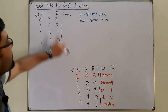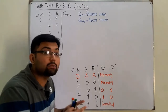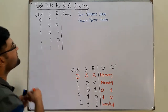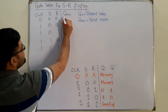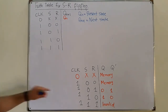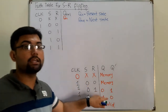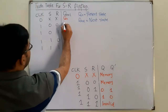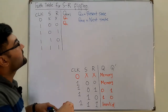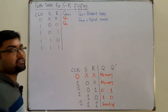The first row has clock = 0, X, X — this corresponds to the memory state. Memory means whatever was the previous output, the next output is the same, which means Q(n+1) = Q(n). Next, when clock is 1 and S, R are both 0, we again have memory, meaning Q(n+1) = Q(n) — the next state equals the present state.